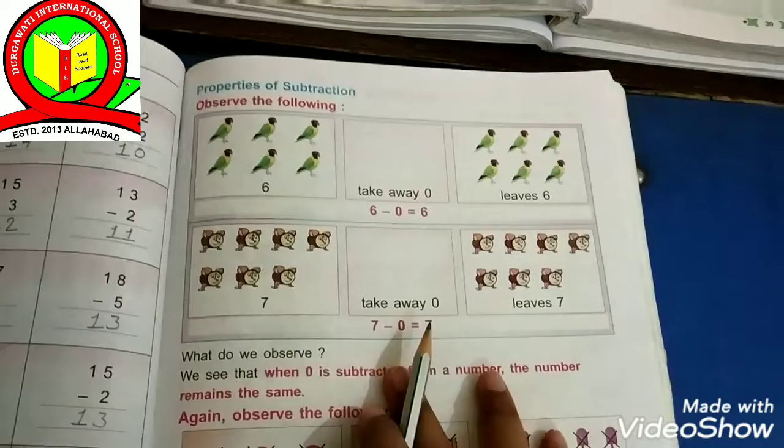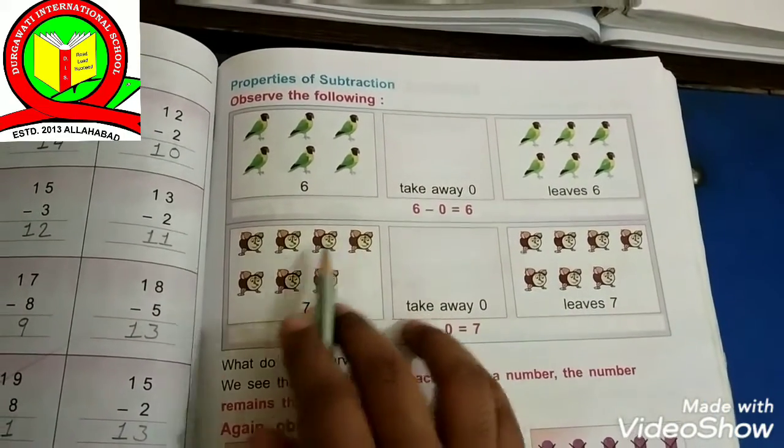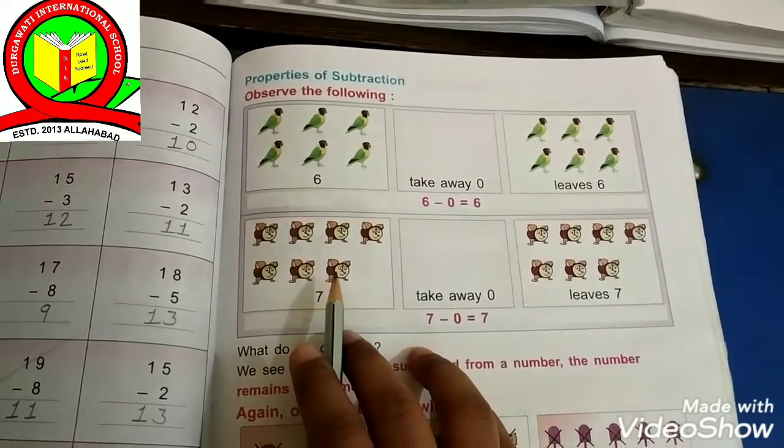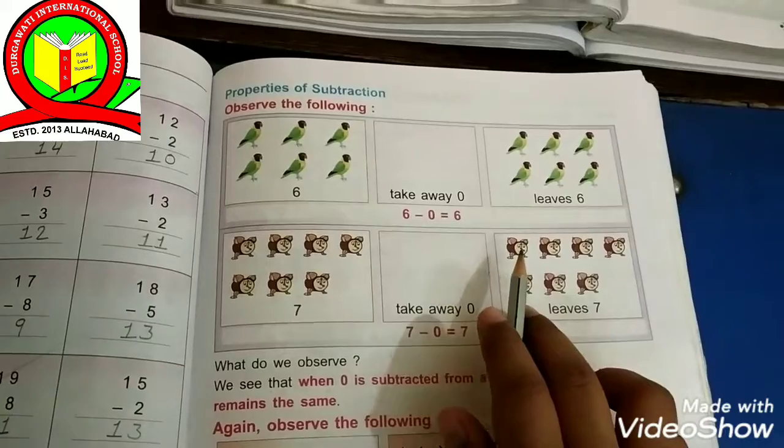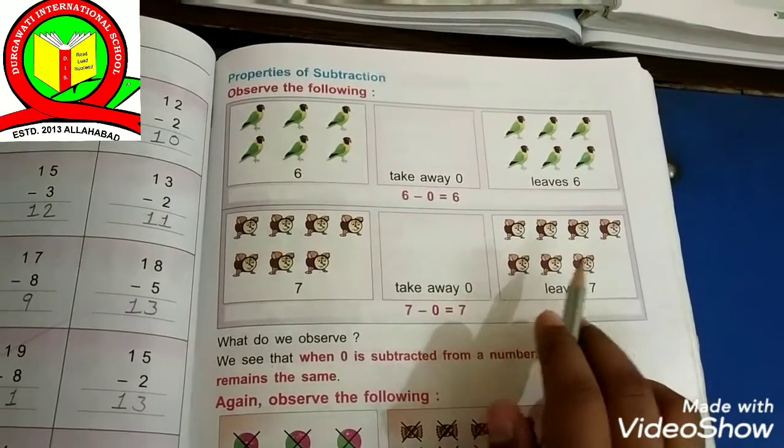Now take another example. 1, 2, 3, 4, 5, 6 and 7. 7 butterflies are here. Now take away 0. How many are left? 1, 2, 3, 4, 5, 6, 7.